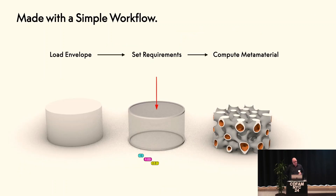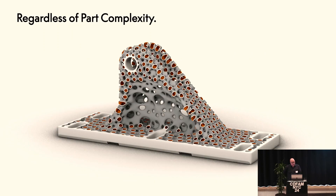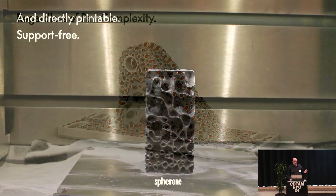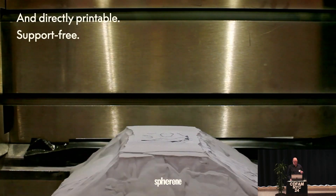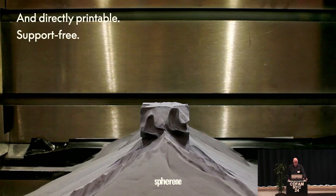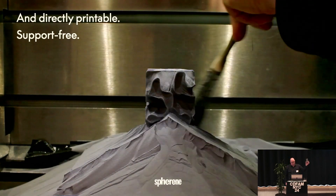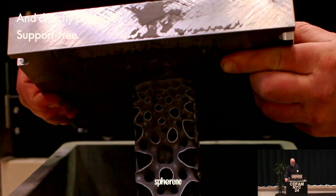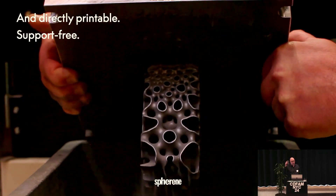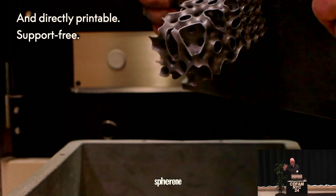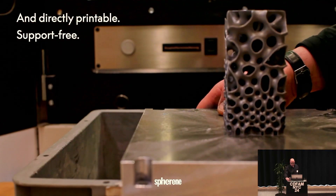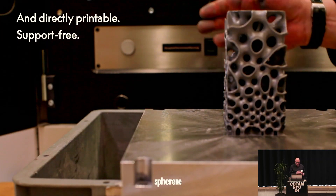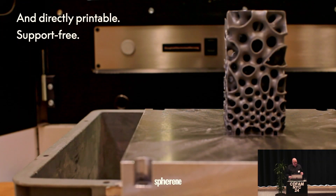The workflow to create Sphirins is very simple: load an envelope, set your requirements, compute it — regardless of the complexity of the part — and it's support-free to print. You're seeing this part here; it was actually just sawn off the base plate. There's no post-processing whatsoever except for cleaning my hands — maybe I should have worn gloves.